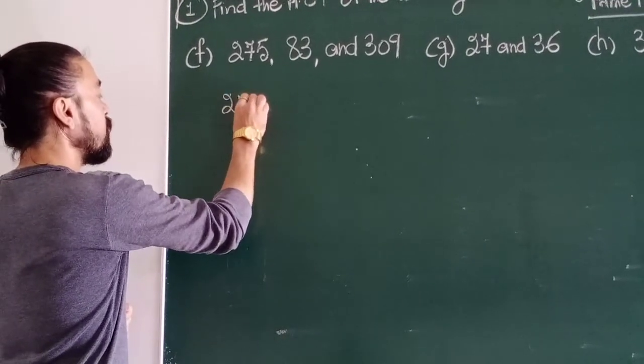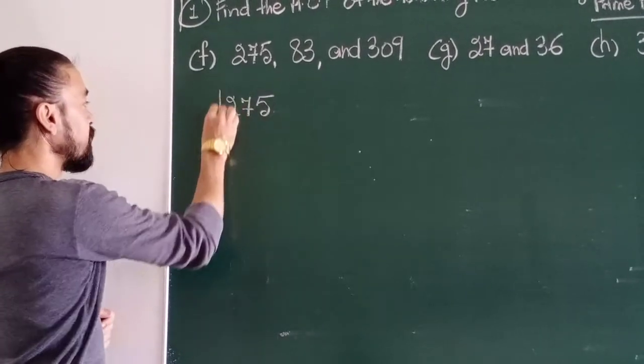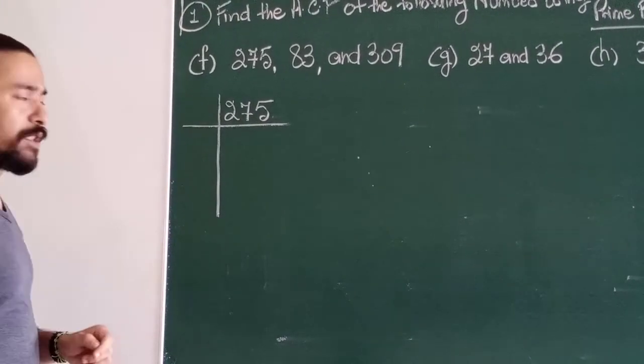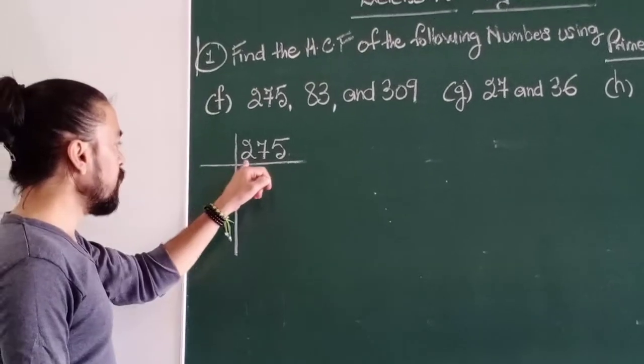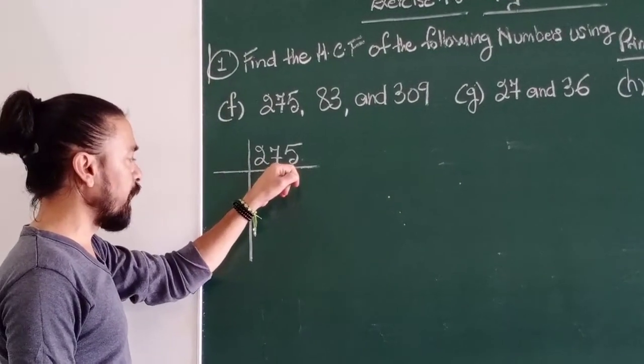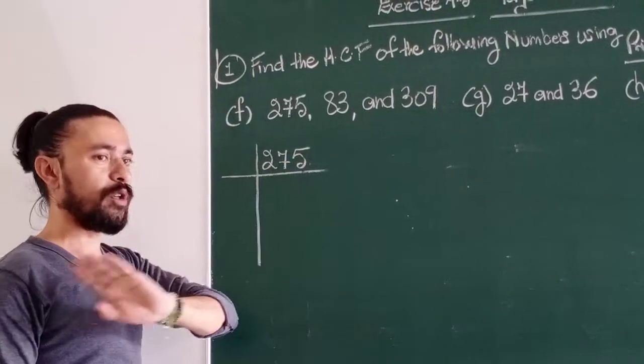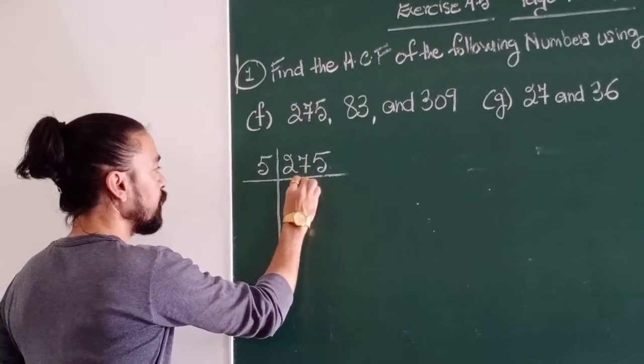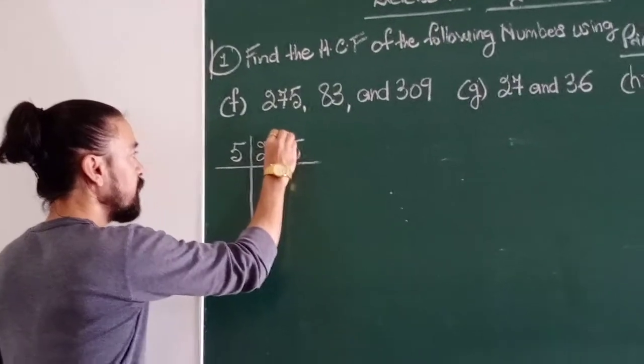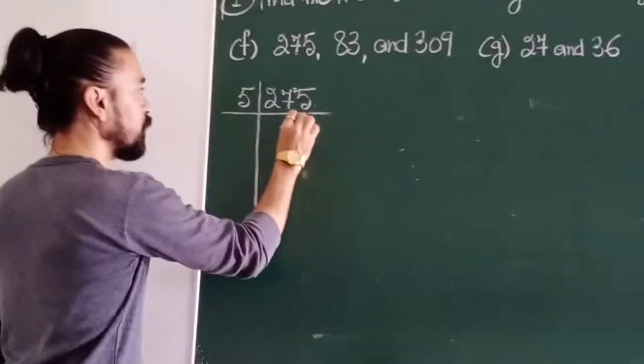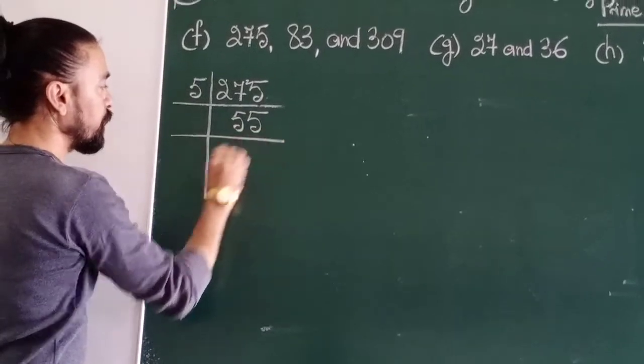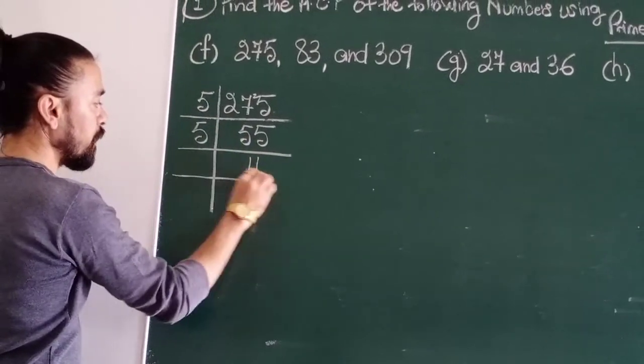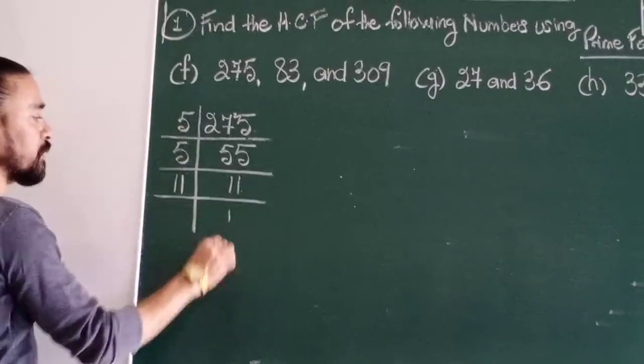First I take 275 and I start factorizing. I ask myself, is it divisible by 2? No, it is not divisible by 2. 3? 2 and 7 gives me 9, 9 and 5 gives me 14, not divisible by 3, only divisible by 5. So 5 times 5 are 25, we can make a small 2 here and it becomes 25. 55 is still divisible by 5, and 11 is a prime number, so 11 ones are 11.